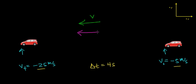The acceleration term should point in the same direction as the velocity term, which indicates that the velocity of the object is going to increase. It's increasing from negative 5 to negative 25 meters per second — the velocity is becoming larger in the negative direction.